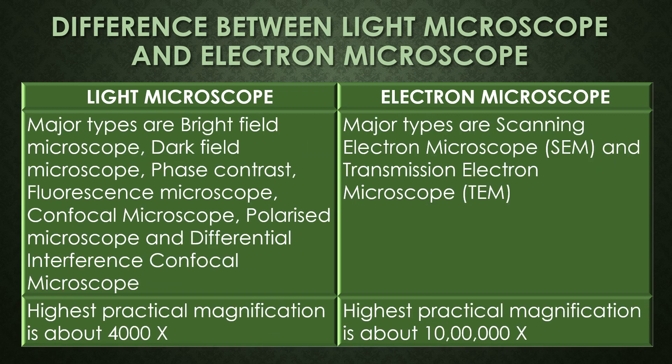The major types of the light microscope are the bright field microscope, dark field microscope, phase contrast microscope, fluorescence microscope, confocal microscope, polarized microscope, and differential interference contrast microscope. The major types of electron microscopes are the scanning electron microscope and the transmission electron microscope.